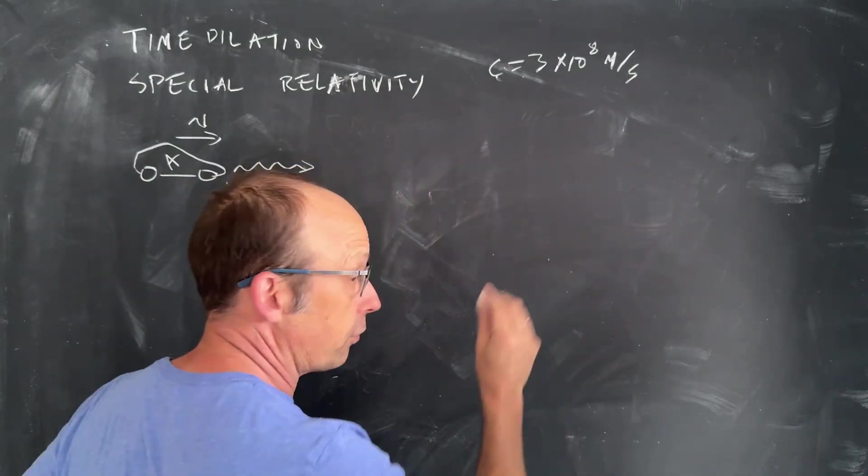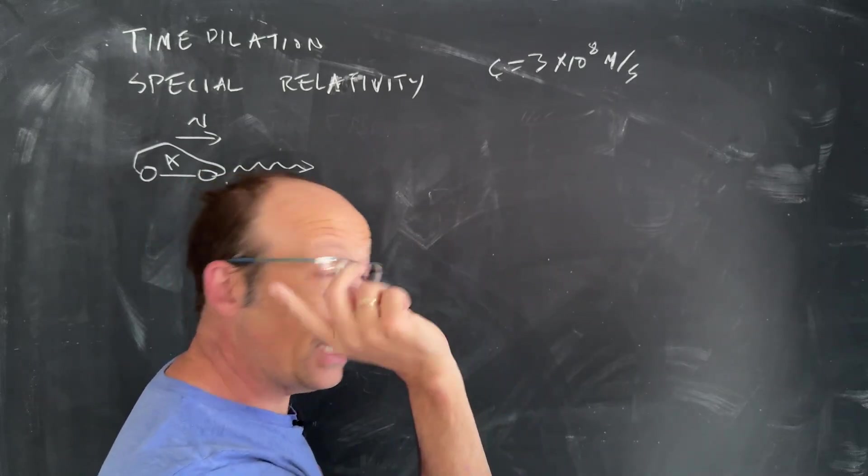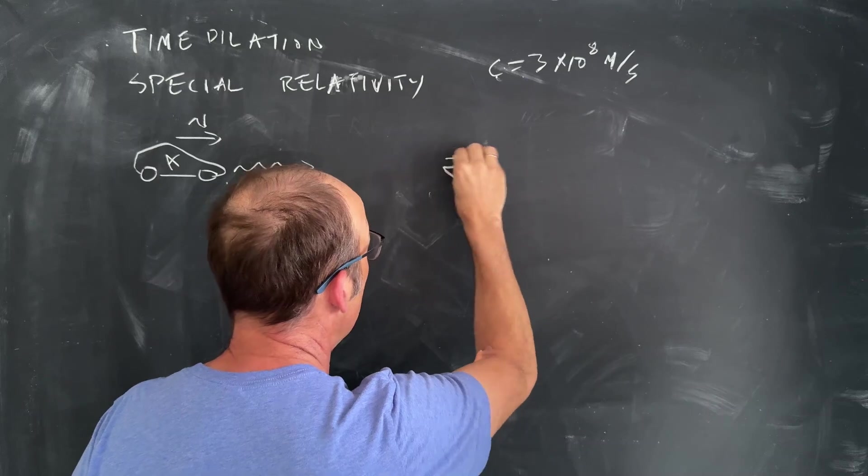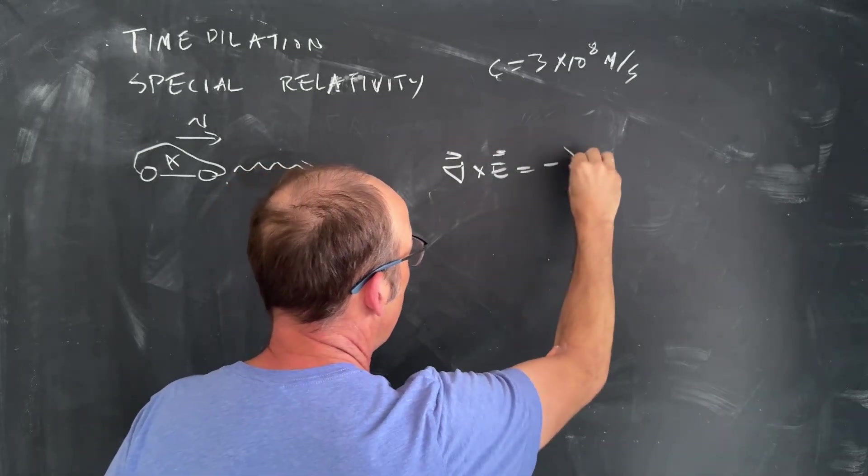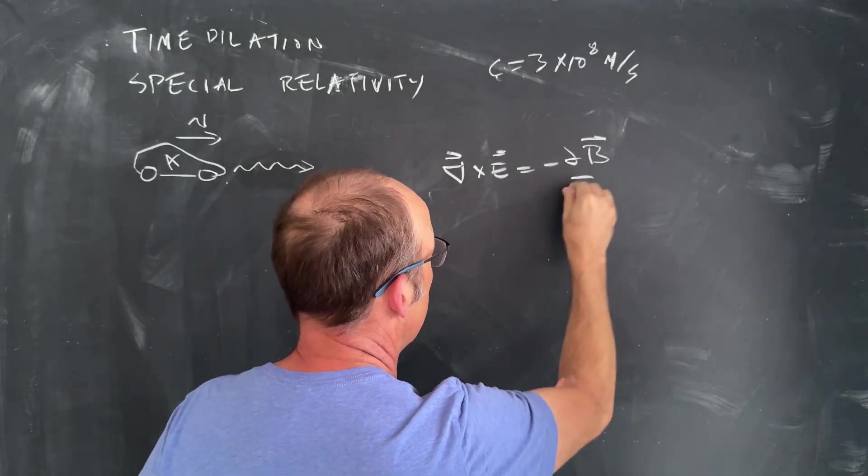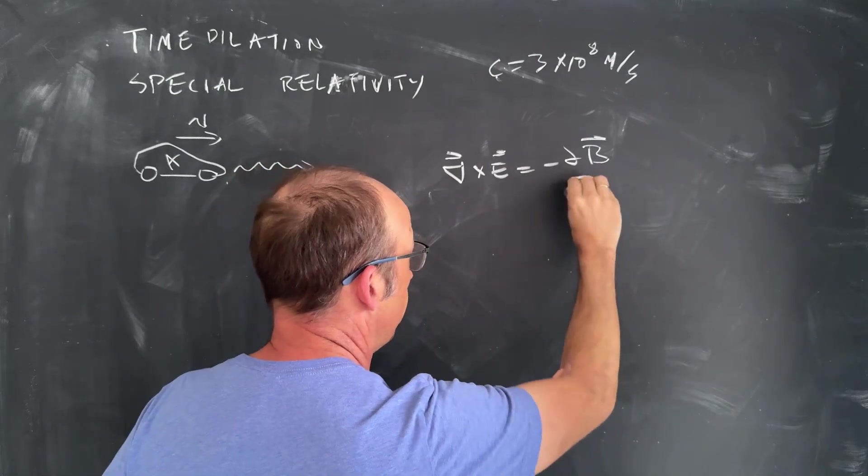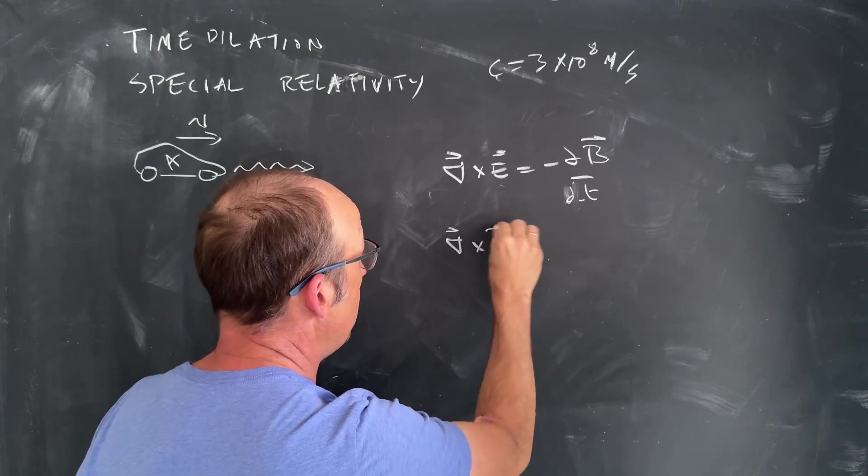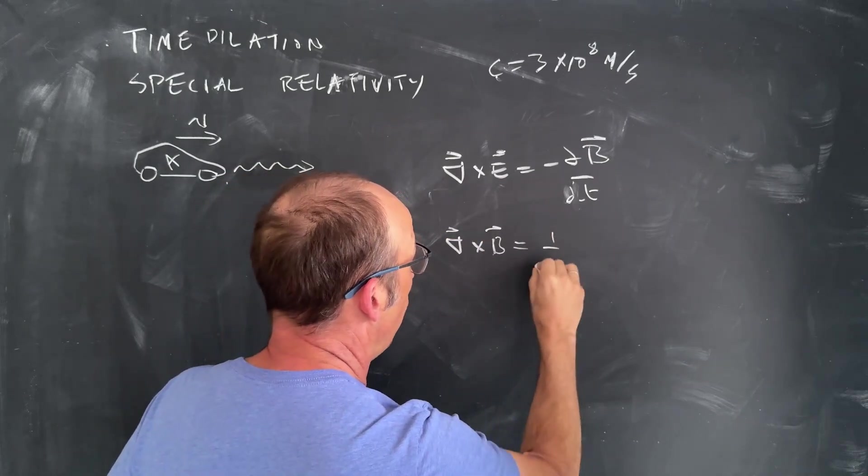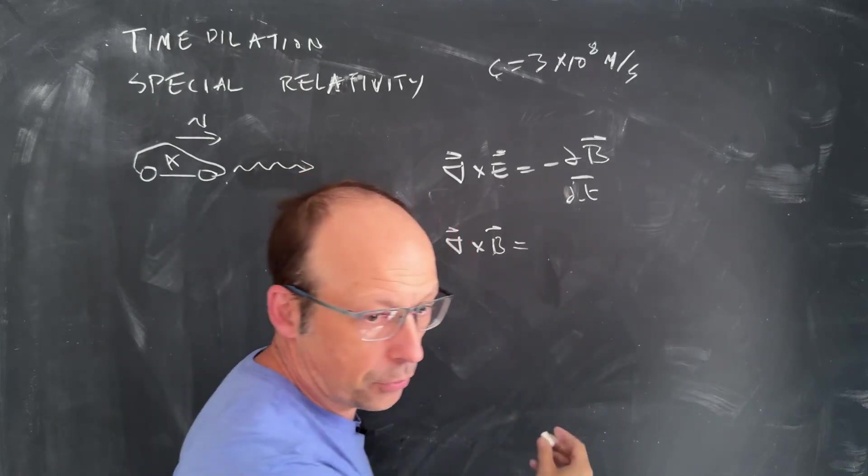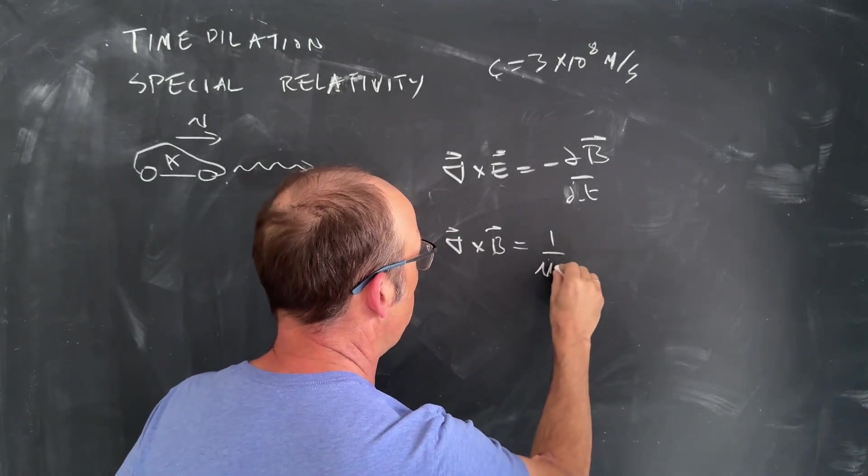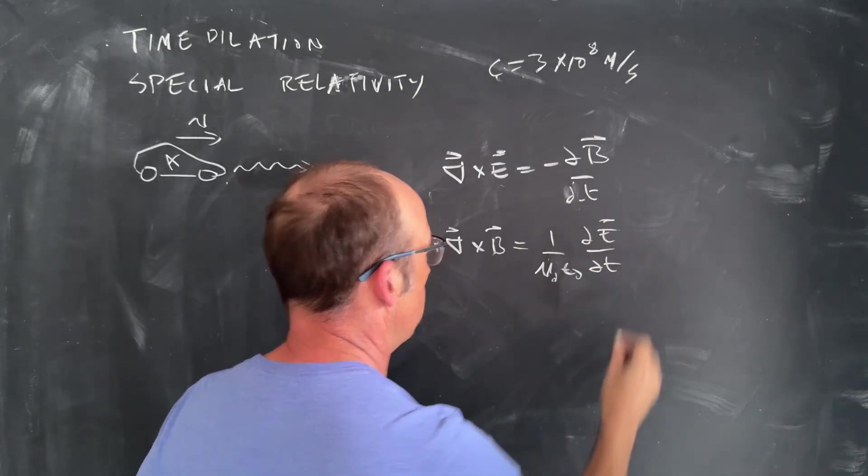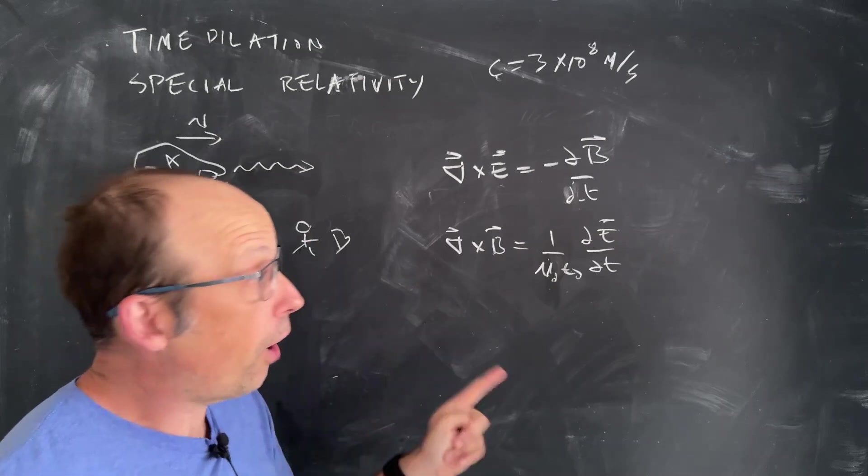The other is this. From Maxwell's equations, if you have Maxwell's equations in an empty space, there's no charges, then we have del cross E is negative the partial of B with respect to T. This is the electric field and that's the magnetic field. And then you have del cross B is one over mu naught epsilon naught partial of E with respect to T. Those are two of Maxwell's equations.